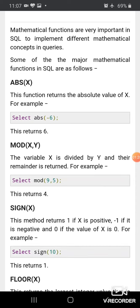Second is MOD(X,Y). The variable X is divided by Y and the remainder is returned. For example, SELECT MOD(9,5) - that means 9 is divided by 5 and the remainder is returned as the result. This returns 4.